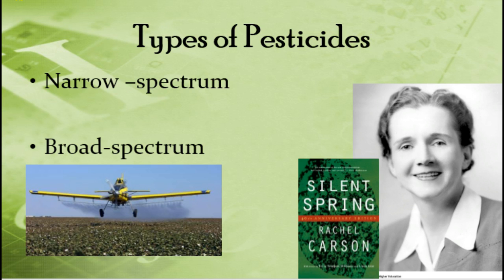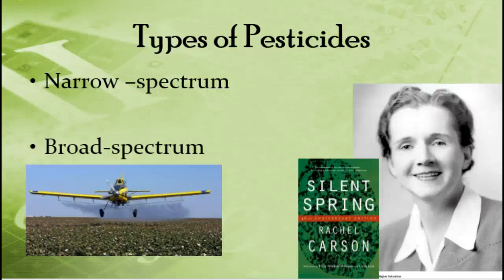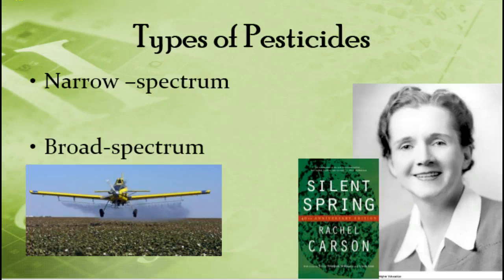Now we're going to go into detail about different types of pesticides. Make sure you write down the pros and cons of each — this comes from chapter 22 of your book. These were basically publicized by Rachel Carson when she wrote Silent Spring. Most people did not know much about pesticides until she came out with this book, which raised public awareness that these things could be toxic in different quantities or harmful to the environment.